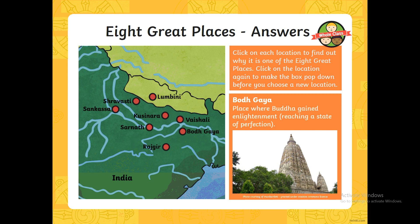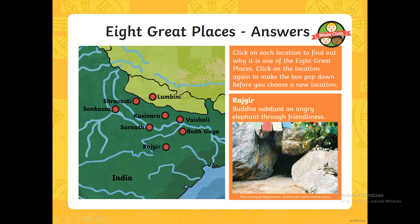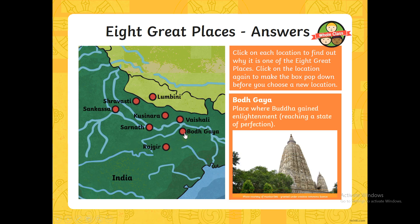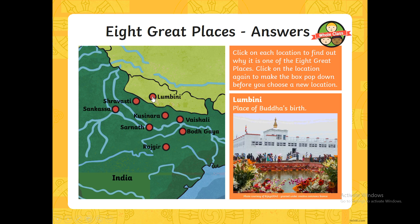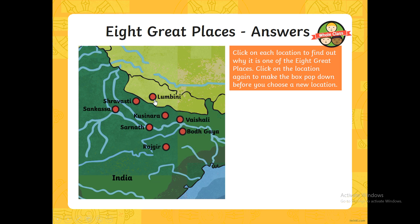And finally we've got Rajgaya, where Buddha subdued an angry elephant through friendliness — again one of the big stories of Buddhism. He managed to calm down an elephant just through using friendliness, so it was another miracle. What I want you to do now is run back through the PowerPoint and write a quick sentence on each of the eight great places, just describing what happened there. For example, put 'Lumbini' and then a dash and 'place of Buddha's birth' — something simple like that for all eight, into your books please, Year 5. Then once you've done that we are going to be completing a little quiz. Pause the video, rewind to find all the information, or get your own information from online if you want — that's fine. Then we'll go through our quiz.